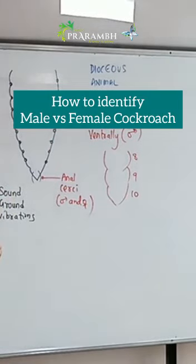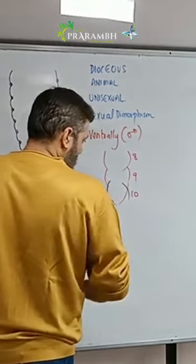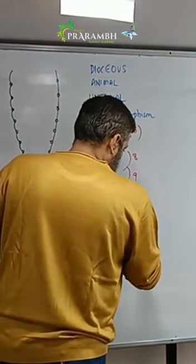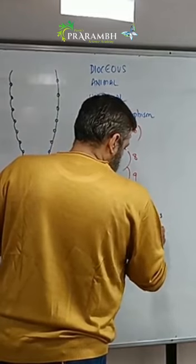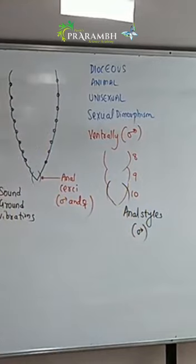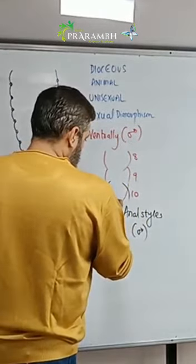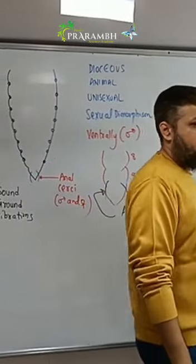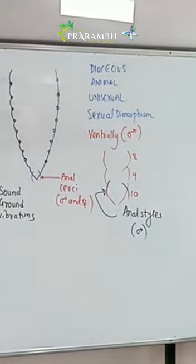In the 9th segment, we will show the presence of a pair of structures called anal styles. These are a pair of structures found ventrally in the male cockroach, arising from the 9th segment.